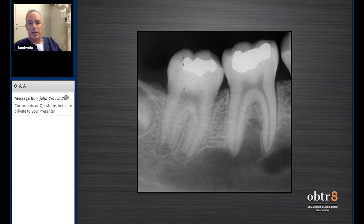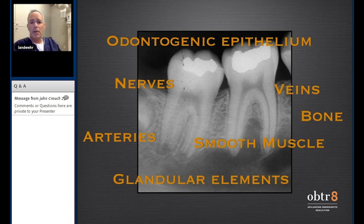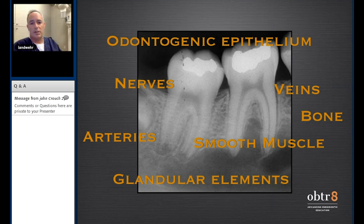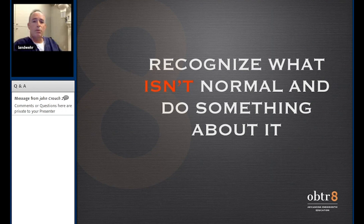I don't really know what it is, nor do I need to know. All I really need to do is recognize that this is abnormal and seek appropriate care — whether endodontic care or oral surgery for a biopsy. From a pathology standpoint, I recognize all things that are there embryologically: odontogenic epithelium, glandular elements, smooth muscle, nerves, arteries, veins — any one of which can lead to pathology. All of those would be considered in my differential diagnosis. I just need to recognize what isn't normal, seek care, move the patient in the right direction, and be proactive.